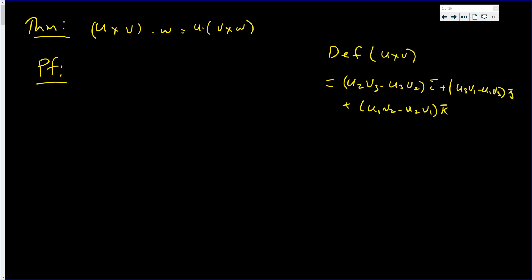In this video we're going to show that u cross v dotted with w is nothing more than u dot v cross w.